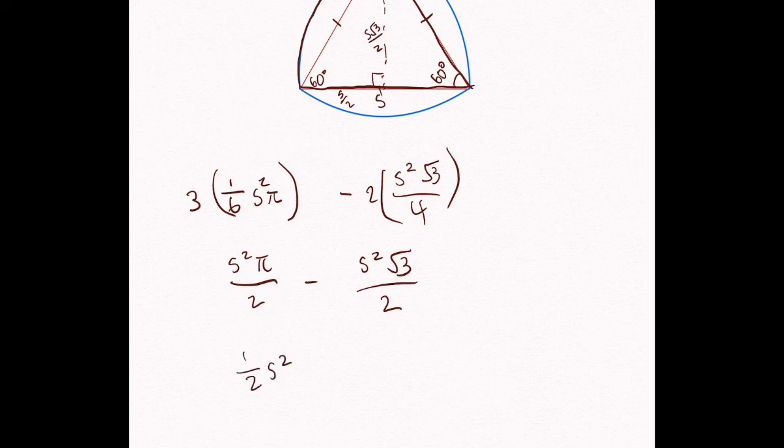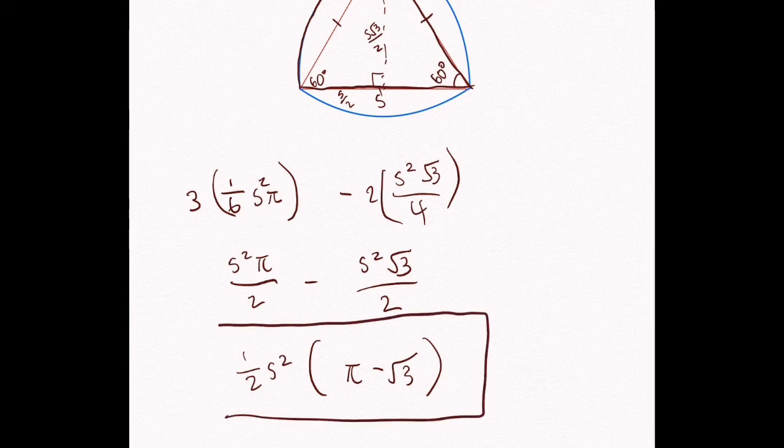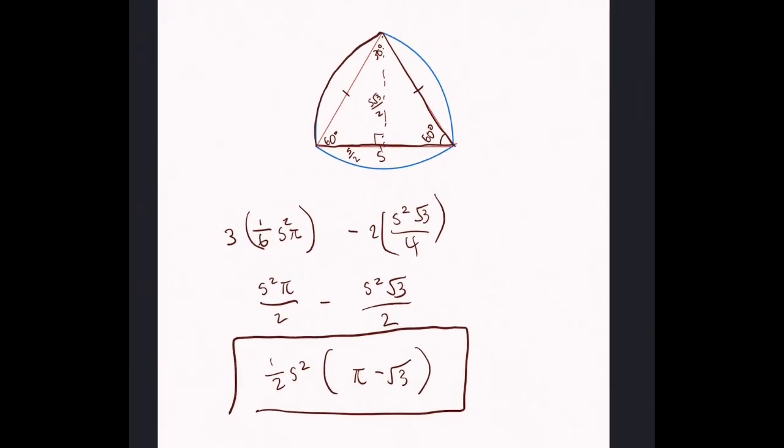And then that'll leave us with pi minus square root of 3 on the inside. And you can't really do anything more to this. This is the final answer. This is the area of this entire Reuleaux triangle.